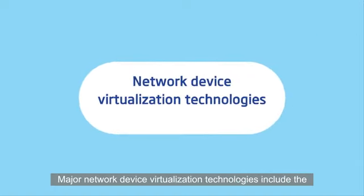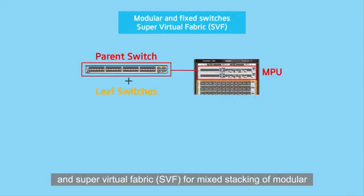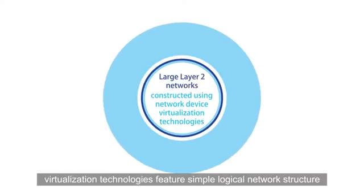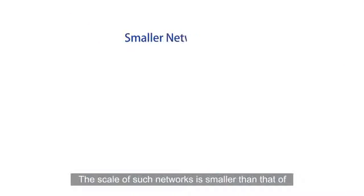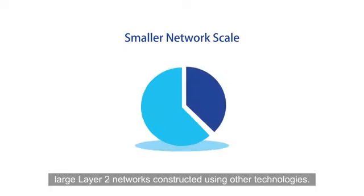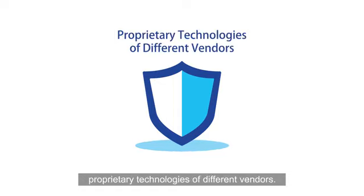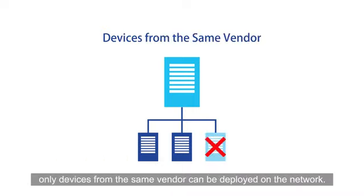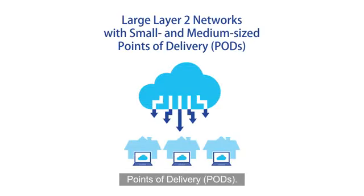Major network device virtualisation technologies include the cluster switch system (CSS) for modular switches, intelligent stacking (iStack) for fixed switches, and super virtual fabric (SVF) for mixed stacking of modular and fixed switches as well as stacking of fixed switches. Large layer 2 networks constructed using these technologies feature simple logical network structure and easy management and maintenance. However, the scale is smaller than networks built using other technologies. These are proprietary technologies, meaning only devices from the same vendor can be deployed. They are suitable for constructing large layer 2 networks with small and medium sized points of delivery.